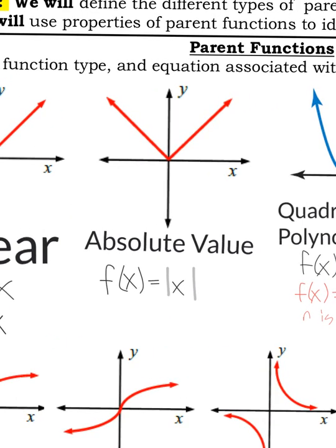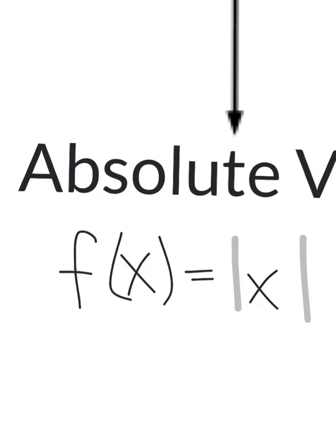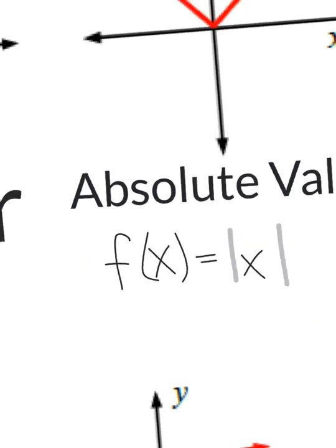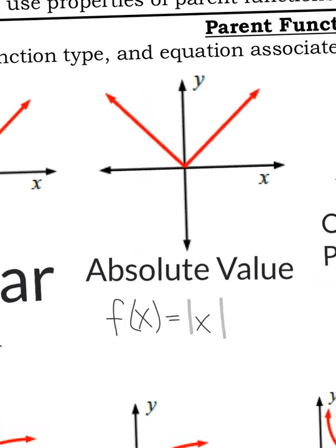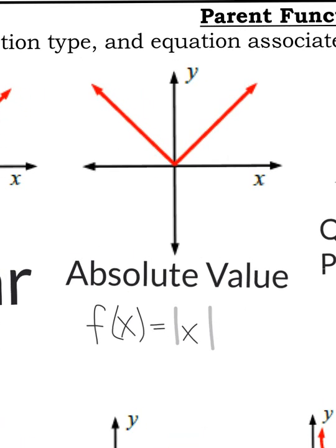The next function makes a V-shape, and that's absolute value — just think V for value. It's important to note that those are bars for the equation f(x) = |x|. Those are the absolute value symbols. You'll notice that it doesn't make any negative y-values; it opens up as a V.